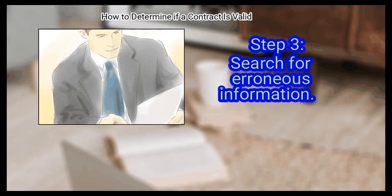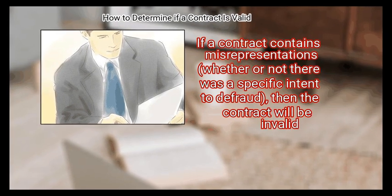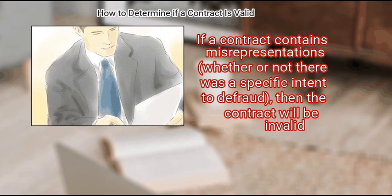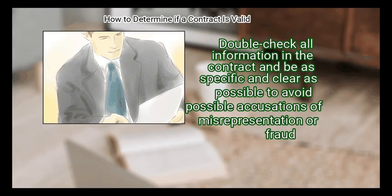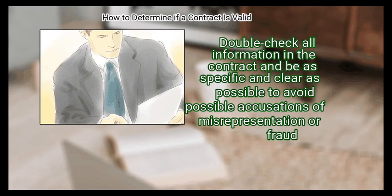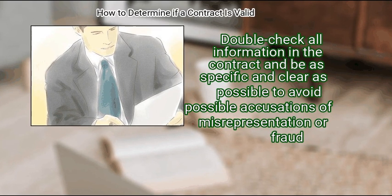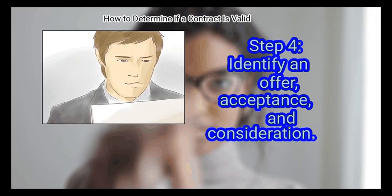Step 3: Search for erroneous information. If a contract contains misrepresentations, whether or not there was a specific intent to defraud, then the contract will be invalid. Double check all information in the contract and be as specific and clear as possible to avoid possible accusations of misrepresentation or fraud.